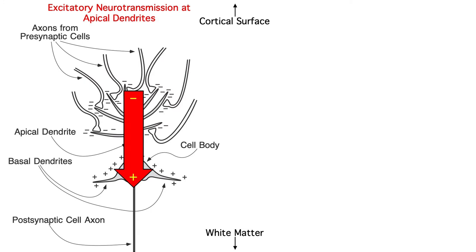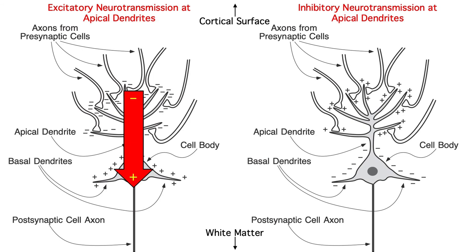By convention, dipoles are represented by arrows, with the arrowhead indicating the positive end. In this case, the negative end is toward the cortical surface, and the positive end is toward the white matter. If we instead had an inhibitory neurotransmitter like GABA released at the apical dendrites, the polarity would flip, and the positive side of the dipole would point toward the cortical surface. And this would reverse the polarity of the voltage we record from our scalp electrodes.